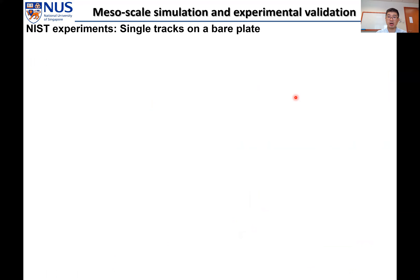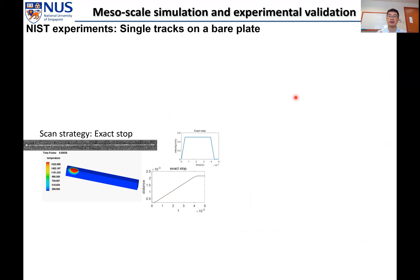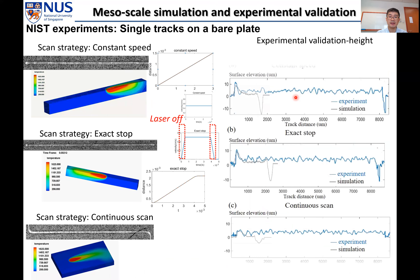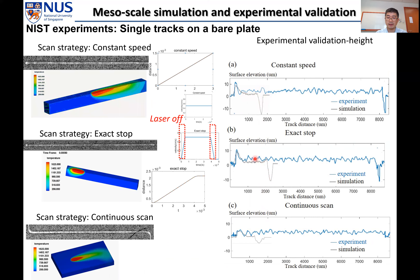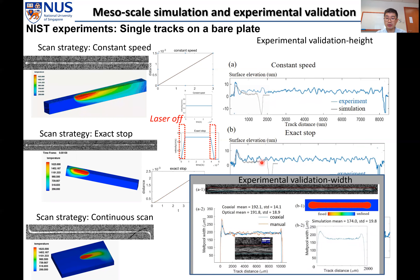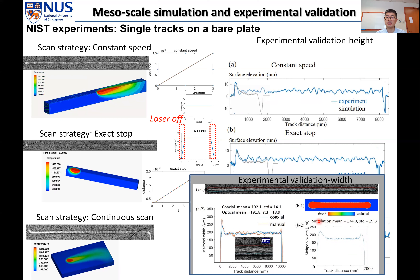To quantitatively validate our model, we collaborate with the U.S. National Institute of Standards and Technology. They perform precisely controlled single-track experiments on bare plates to exclude the randomly packed powder layer, using three different scan strategies with different laser power and scan speed settings. Our simulation matches the surface elevation results with a difference below 2 micrometers, demonstrating high accuracy. We also validate against multiple melt pools, matching both mean values and standard deviations from experiments.